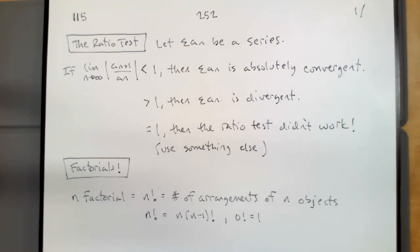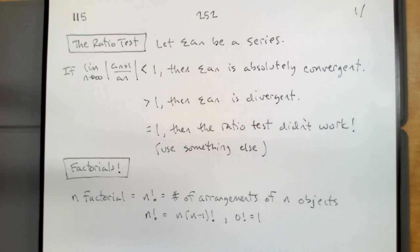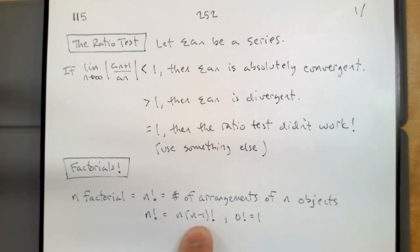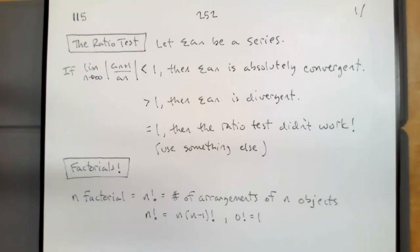One factorial is one, two factorial is two. Once we have those two arrangements, each of those two arrangements had three places we could put a third object, so we take each of those two and multiply by three. Then we take each of those six and multiply by four. To find n factorial, we take the number of arrangements with one less and multiply by the total number of items.